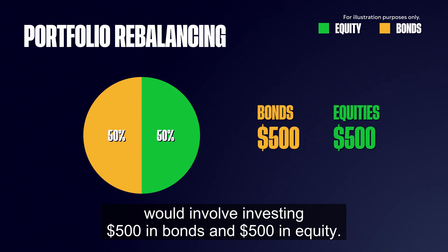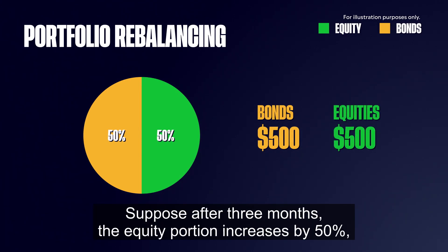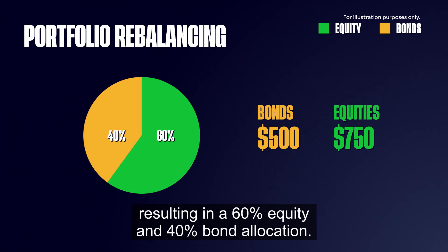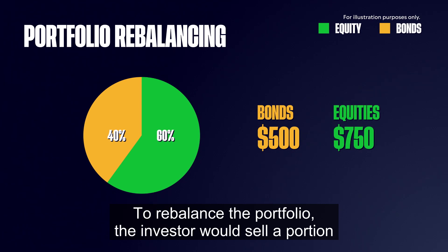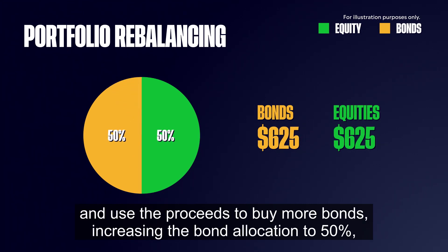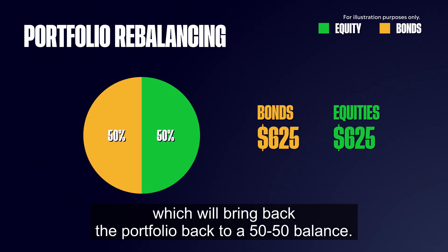Suppose after three months the equity portion increases by 50% but the bond portion remains unchanged, resulting in a 60% equity and 40% bond allocation. To rebalance, the investor would sell a portion of their equity holdings to reduce equity exposure to 50%, and use the proceeds to buy more bonds, increasing the bond allocation to 50% — bringing the portfolio back to a 50/50 balance.